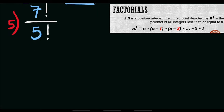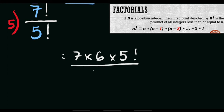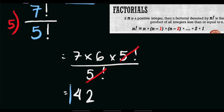For example number 5, we have 7 factorial divided by 5 factorial. Using a shortcut, we can write 7 factorial as 7 times 6 times 5 factorial, divided by 5 factorial. Since they share the common 5 factorial, we cancel it out, leaving 7 times 6, which equals 42. So 7 factorial divided by 5 factorial equals 42.